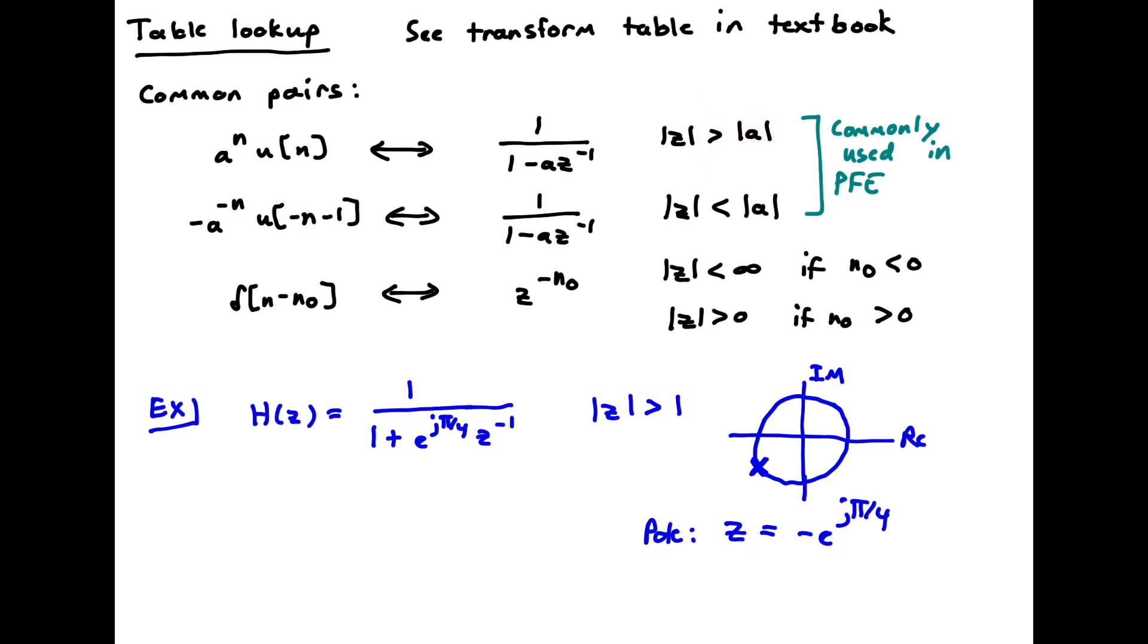And then we have another sequence, minus a to the minus n, u of minus n minus 1, that gives us the same algebraic expression as this one except a different ROC. So now the ROC is z less than absolute value of a. So this is the right-sided sequence and this is the left-sided sequence. These are two pairs that we commonly encounter when we're doing partial fraction expansion.